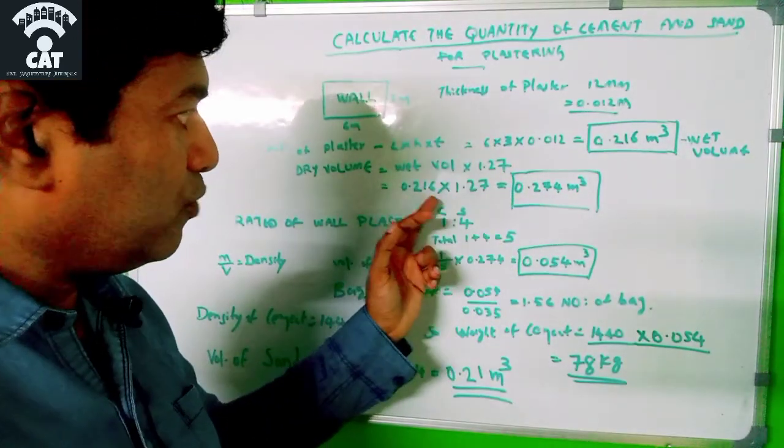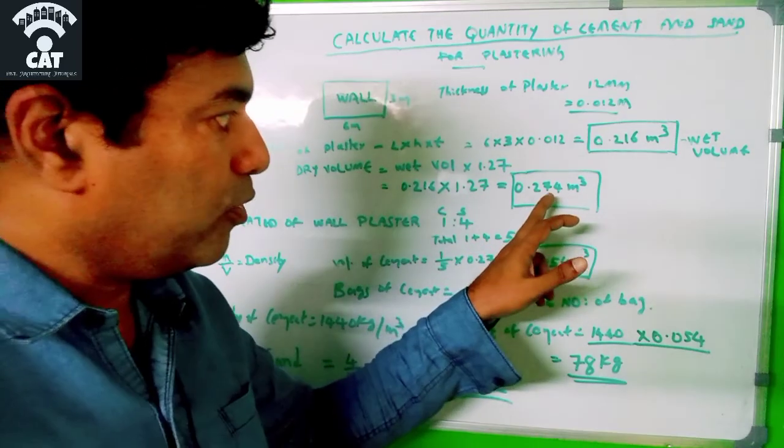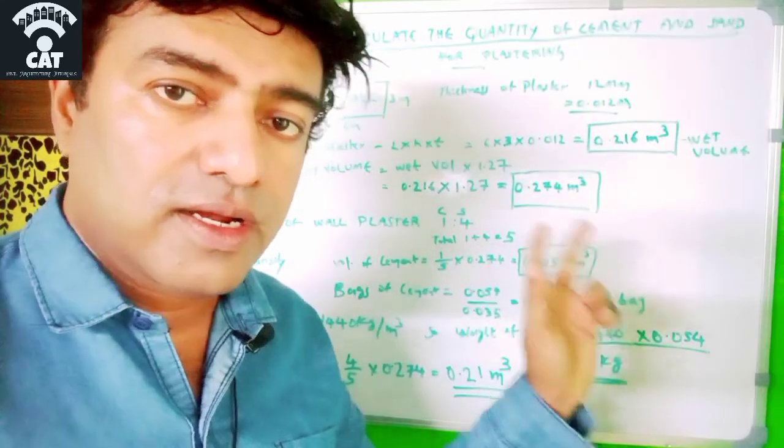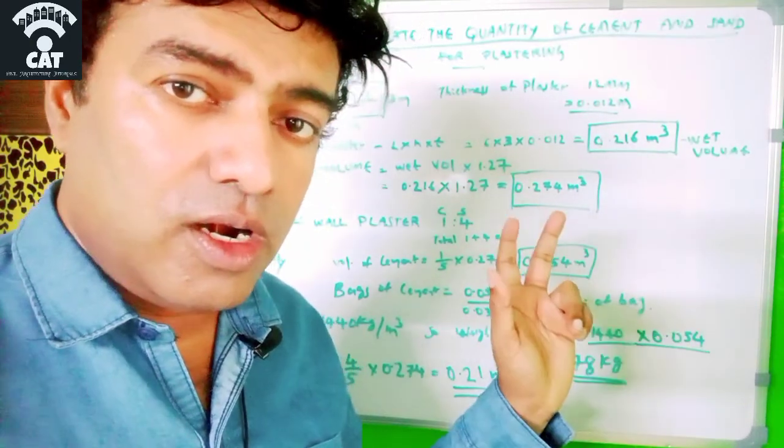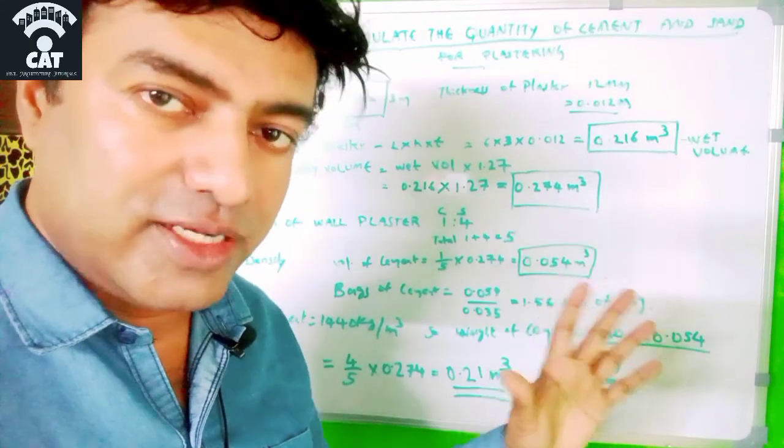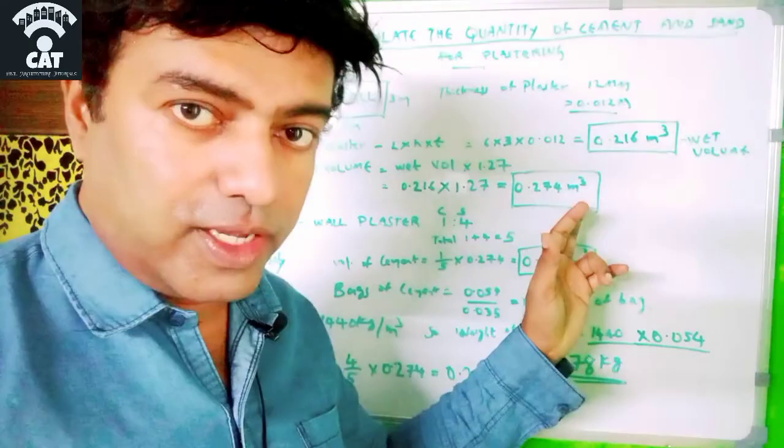Dry volume = wet volume × 1.27 = 0.216 × 1.27 = 0.274 cubic meters. This is the actual dry volume of wall plaster, which includes cement and sand, with no water.